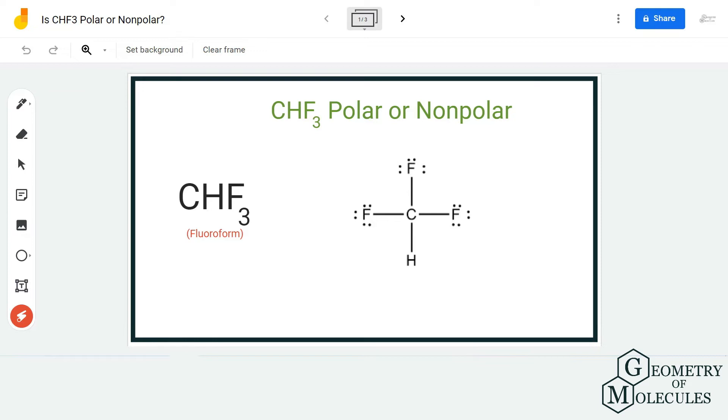Hydrogen and carbon do not have much electronegativity difference between them, but when you compare the electronegativities of fluorine with hydrogen and carbon, it is quite higher, as fluorine is the most electronegative element on the periodic table.